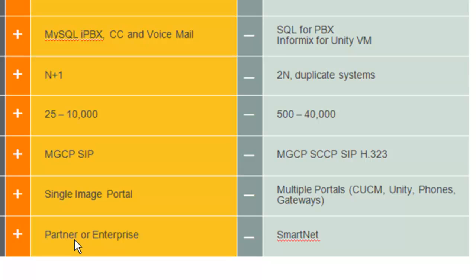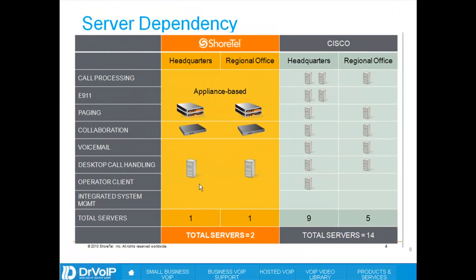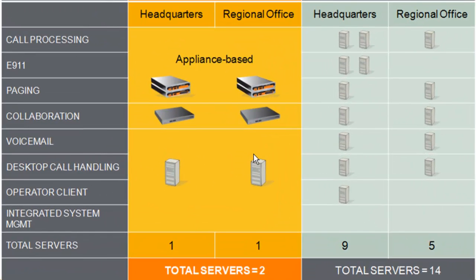For ongoing support, typically you're going to work with a ShoreTel partner or get enterprise support directly from ShoreTel. In the case of Cisco, the same options exist, but Cisco expects you to have a SMARTnet support agreement in place. Looking at deployment and server dependency for ShoreTel: you have a headquarter server, and out at a branch office you might put a distributed voicemail server to keep auto attendant and voicemail off your very expensive WAN connection.